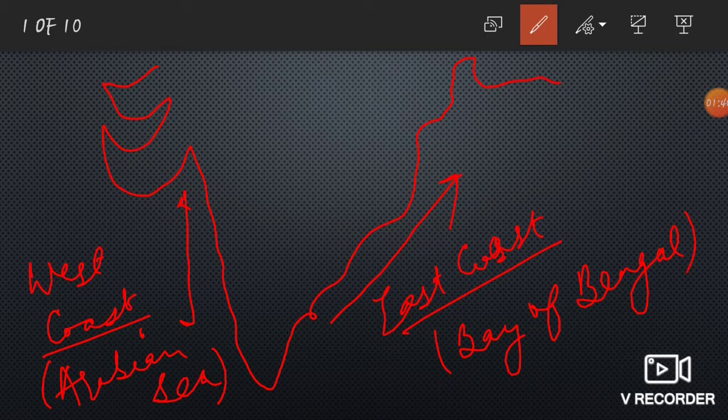The ports we are going to study in this video are classified as per zone. There are two zones of ports in India: the west coast and the east coast.